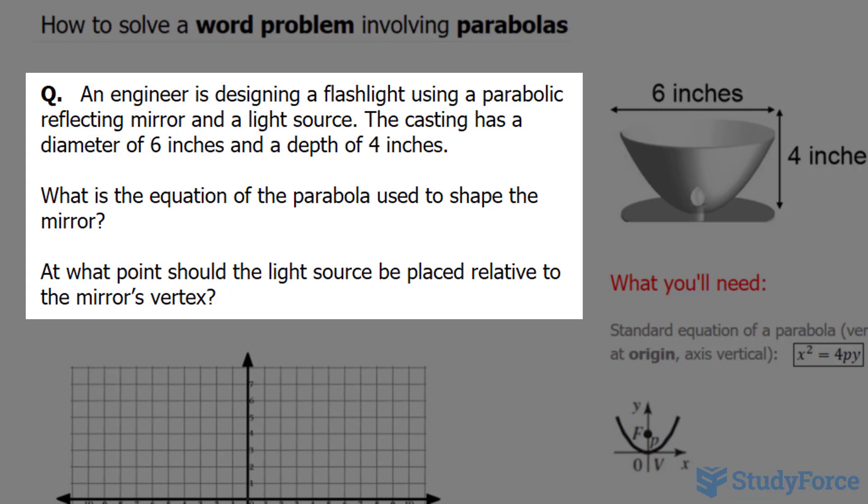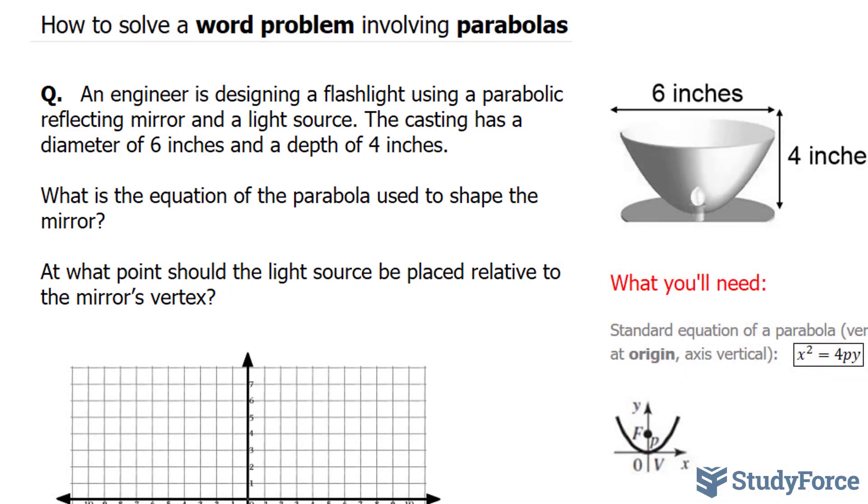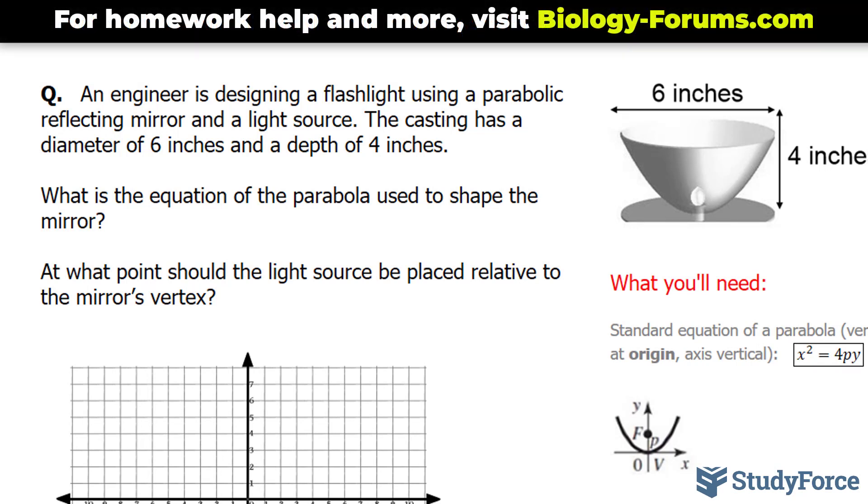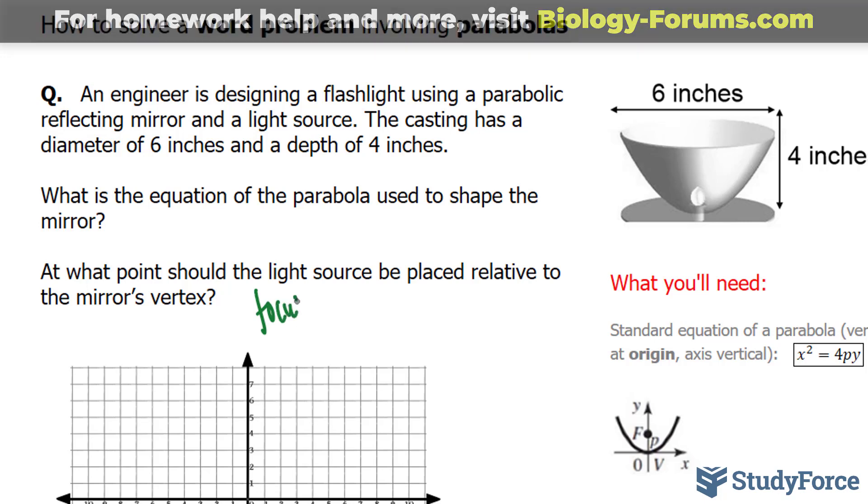The casting has a diameter of 6 inches and a depth of 4 inches. What is the equation of the parabola used to shape the mirror? And at what point should the light source be placed relative to the mirror's vertex? This last question is technically asking us for the focus. So let's write that down.